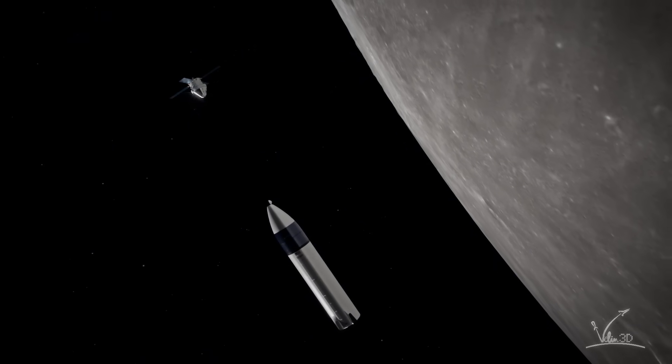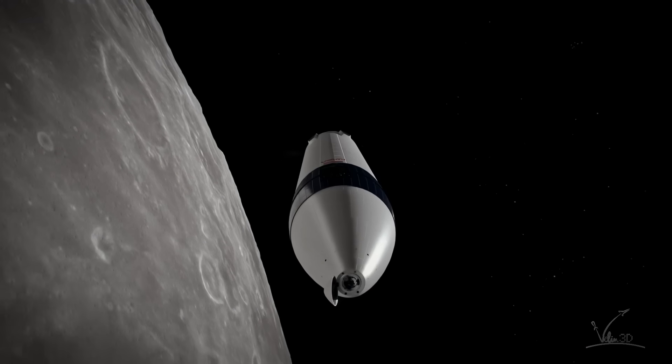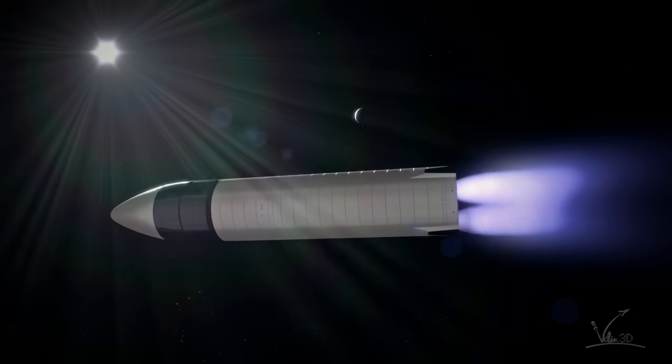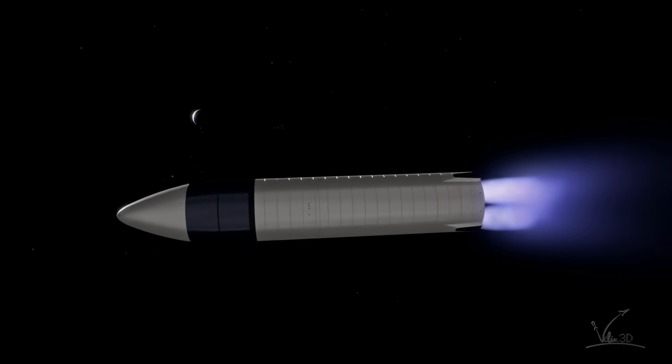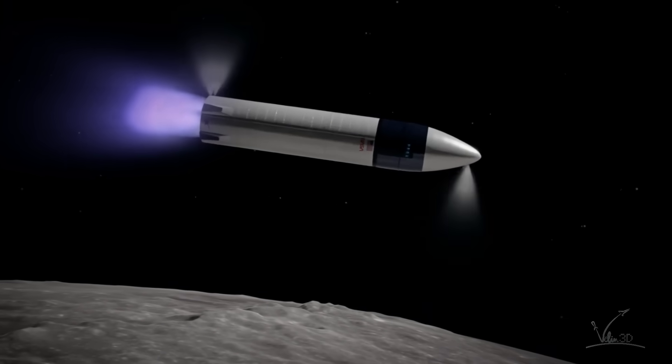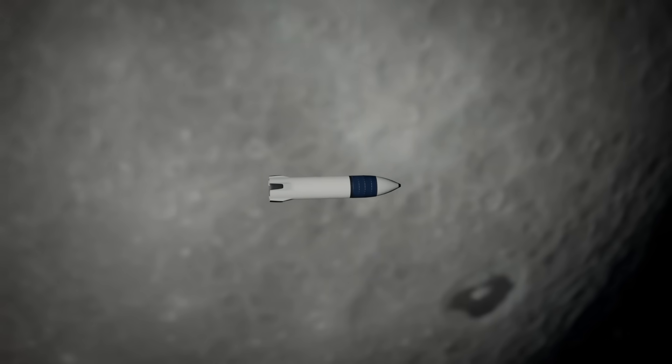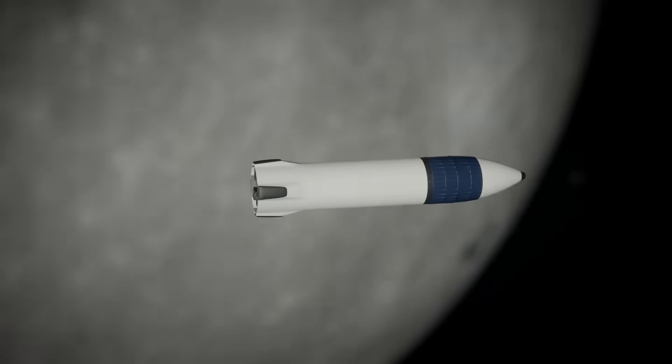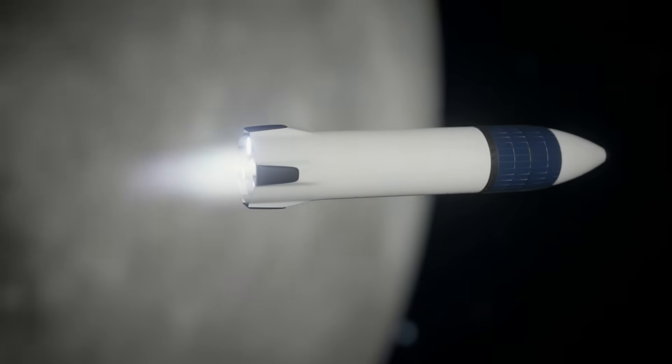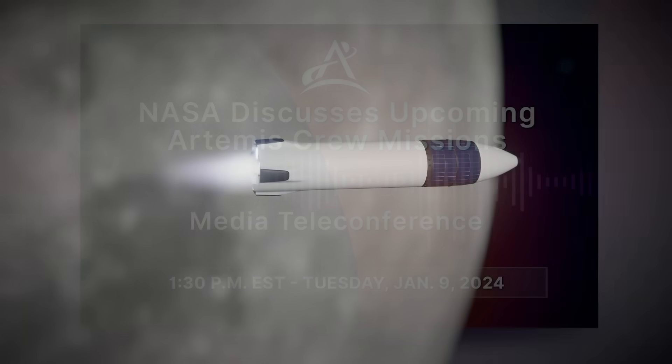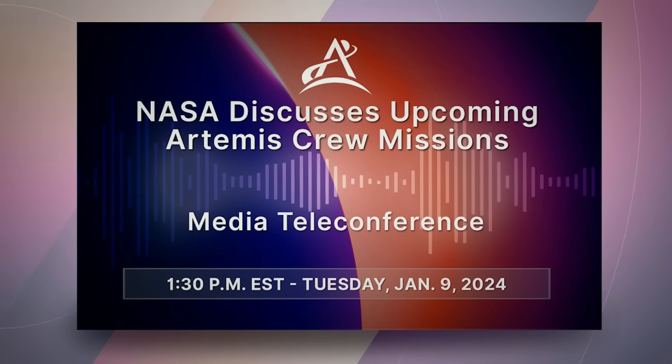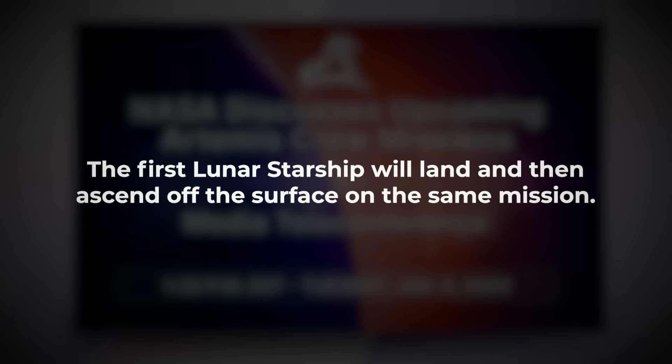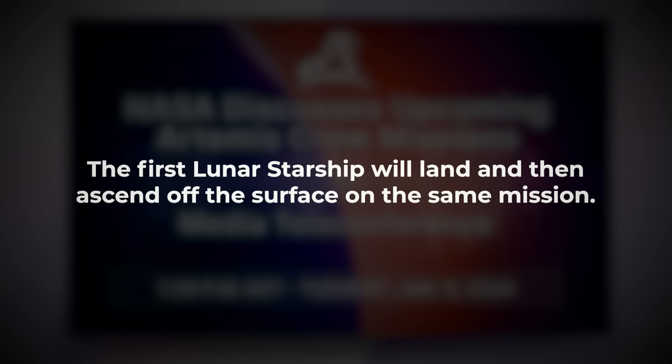Now, the first Starships to land on the Moon will not carry any people on board. A big part of the NASA requirements for considering Starship to be safe will be an uncrewed test landing. The idea right now is to send a skeleton Starship for the first touchdown on the Moon, basically an empty test vehicle that just needs to prove the landing system works. This is according to NASA. Although, on that same conference call from earlier this year, Jessica Janssen also clarified that the first lunar Starship will land and then ascend off the surface on the same mission.